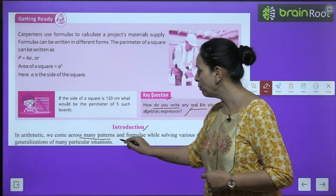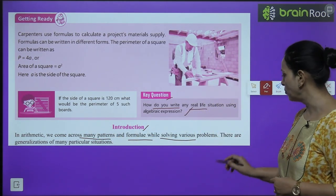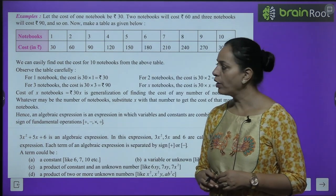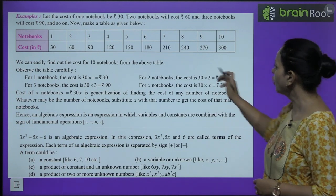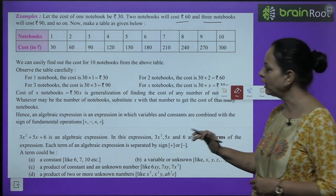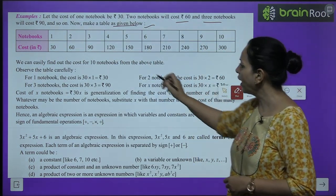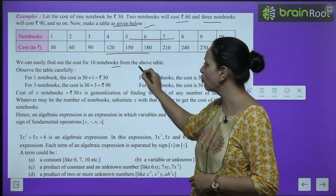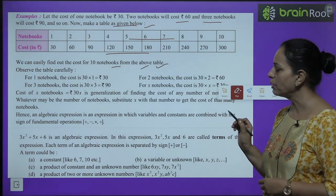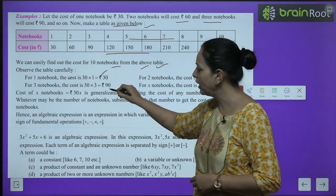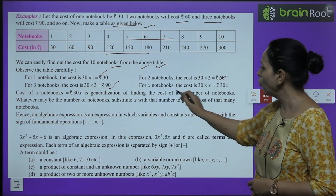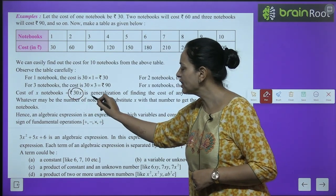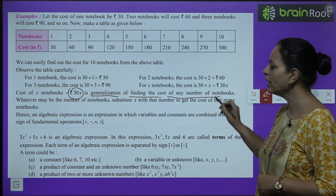In arithmetic we come across many patterns and formulas while solving various problems — these are generalizations of particular situations. For example, let the cost of one notebook be ₹30, two notebooks ₹60, three notebooks ₹90, and so on. For x notebooks the cost is 30x. This is the generalization of finding the cost of any number of notebooks.